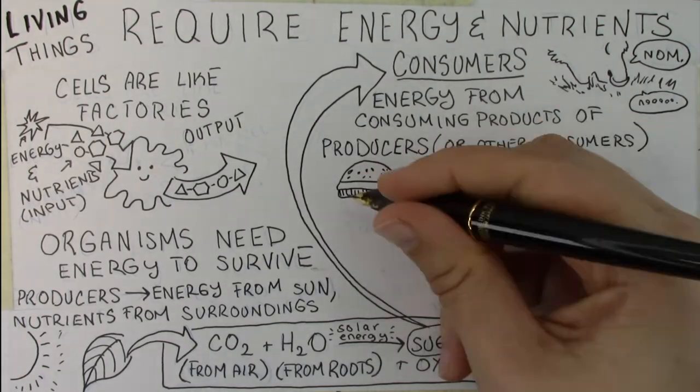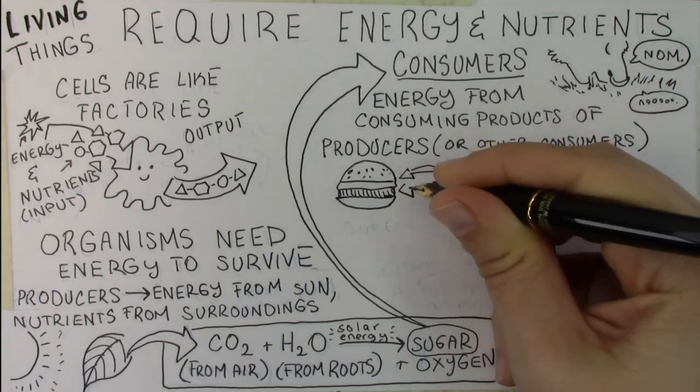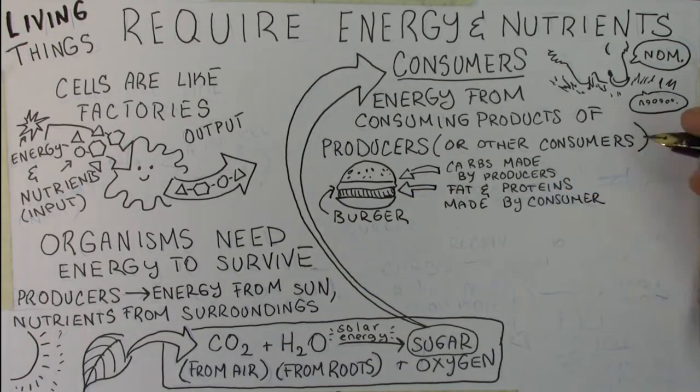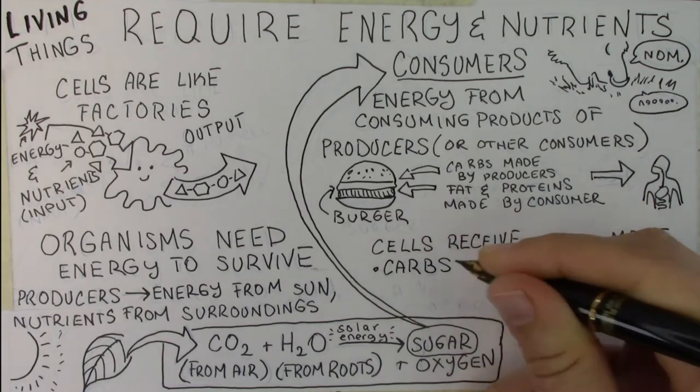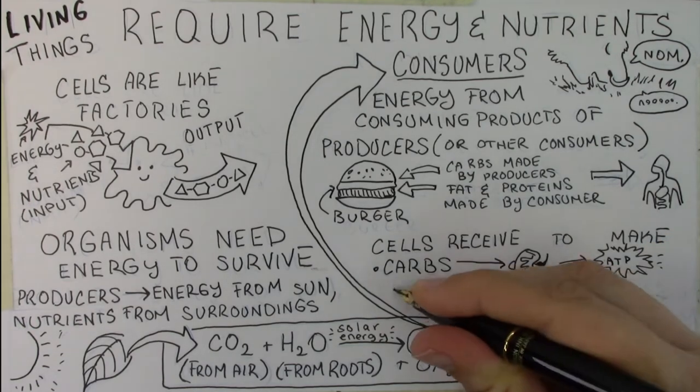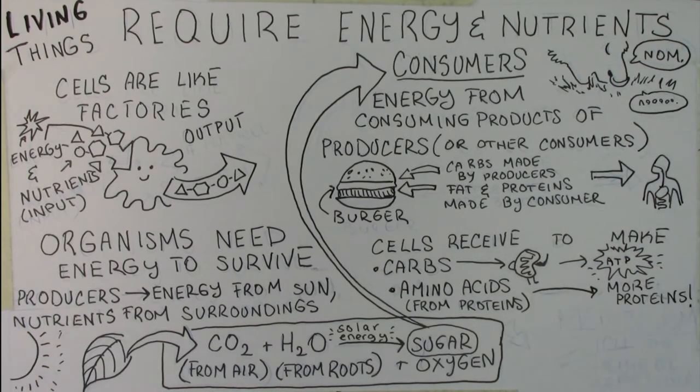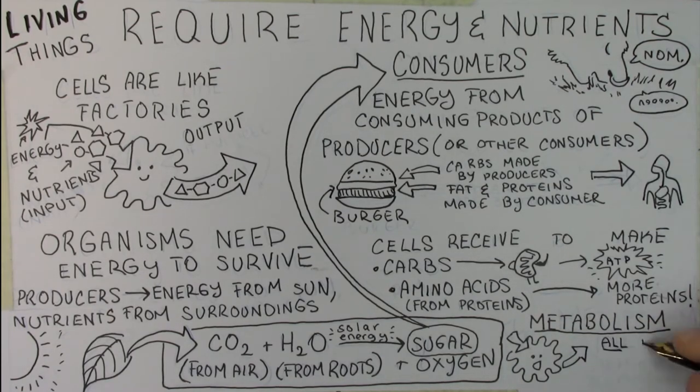And in that consumption, you're going to get access to other inputs that you need to survive as well. So for instance, if you eat a cheeseburger, you're going to get carbs from the burger bun, which is the product of photosynthesis from wheat, but you're also going to get fats and proteins from the burger patty and the cheese as well. That material is going to go through your digestive system, it's going to get broken down, and then your cells are eventually going to receive some inputs. The carbohydrates are going to go through your mitochondria when they're converted to ATP, and then the amino acids from proteins are going to be used to build other proteins that you need to survive. Collectively, all of these chemical reactions that occur in your cell are known as your metabolism.